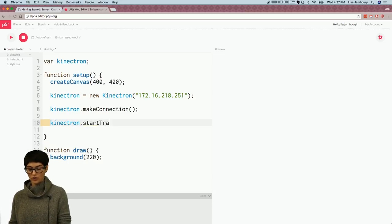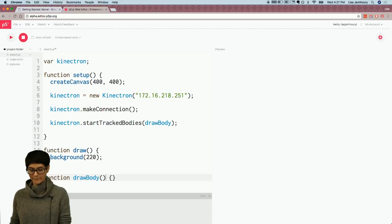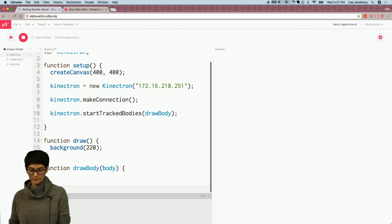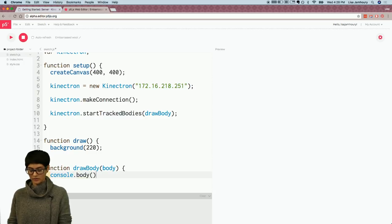So Kinectron.makeConnection and now we're connected. Then the last thing that I need to do is ask for a feed. And so for this I'm going to ask for tracked bodies. So I say Kinectron start tracked bodies. And then I'm going to tell my program what to do with that Kinect data once it receives it. And so for this I'll say draw body. And I'll write that function down here which is draw body. And then the data that comes in will come in as a body. So let's just make sure that this is working before we go any farther. Oh, console body, no, console log.